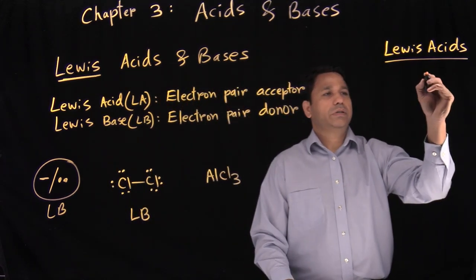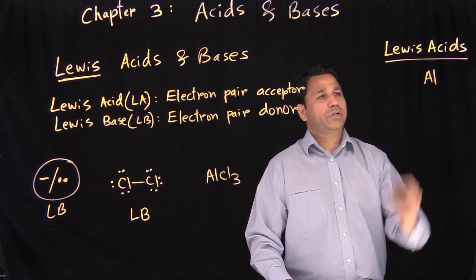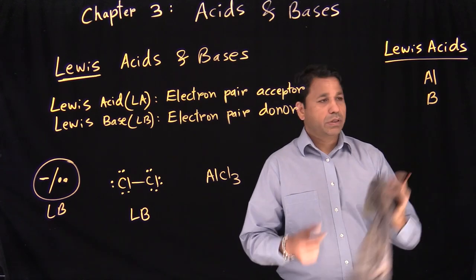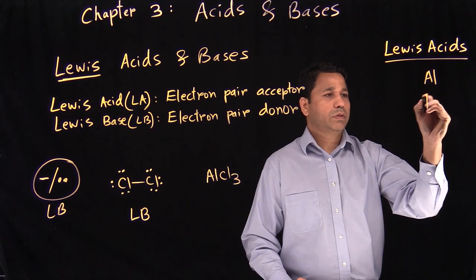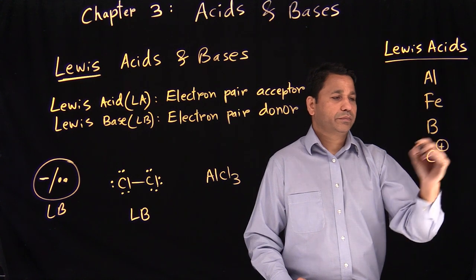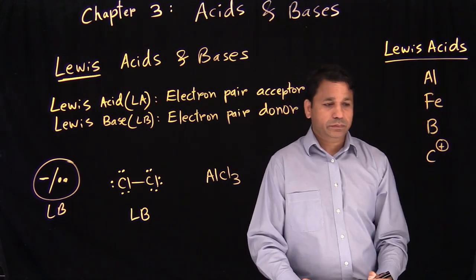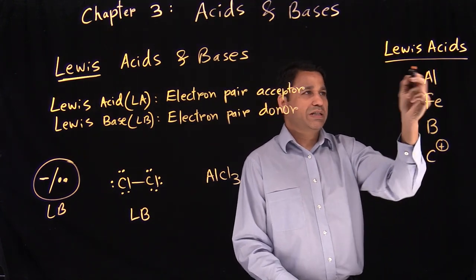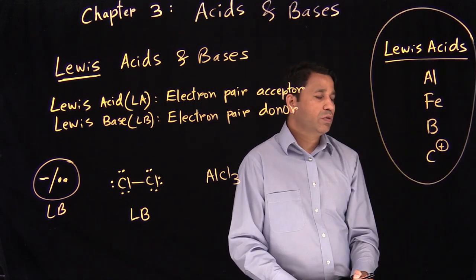So what are Lewis acids? Lewis acids are elements like aluminum, boron, iron, or carbon plus. Anytime you see these four elements in your reaction, you call those Lewis acids. These are the common ones — there are a few more, but mostly we use these four.